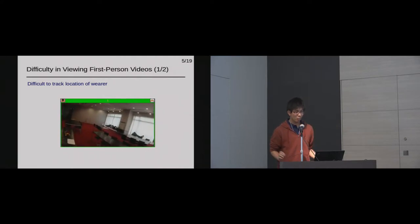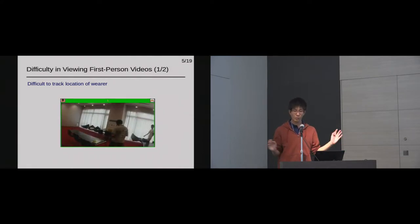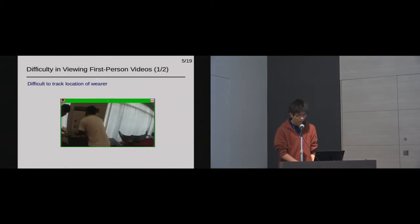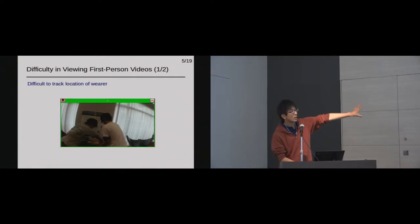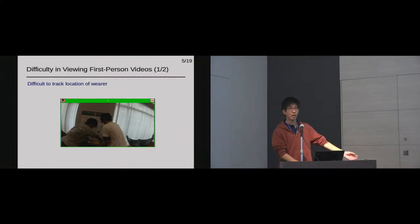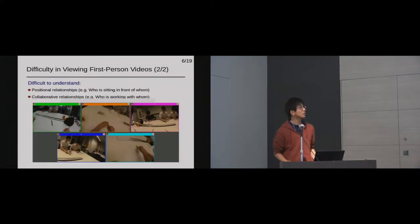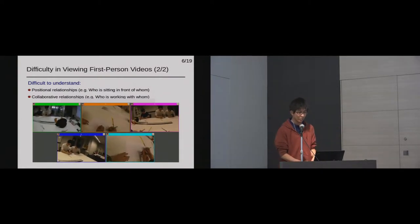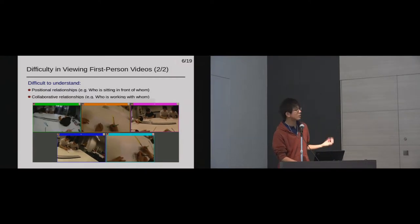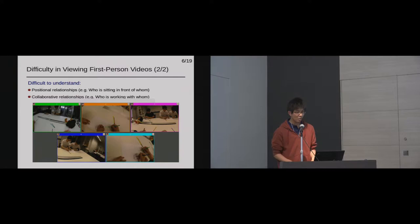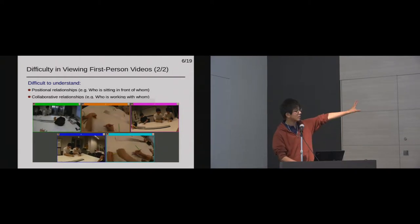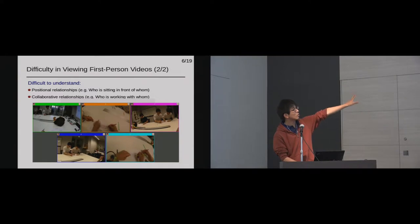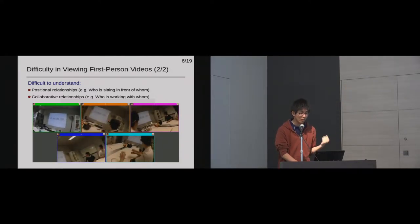However, we confront lots of difficulties when viewing first-person videos. As we can see in this example video, there appears continuous head motion over a viewer. Moreover, we can see only a limited part of the entire workspace, so it is very difficult to track the geometric location of the viewer. The second example video shows five workers sitting around a table, divided into three groups to perform collaborative tasks such as drawing papers. When viewing these multiple first-person videos at once, it is very difficult to understand the positional relationship of multiple workers, such as who is sitting in front of whom.